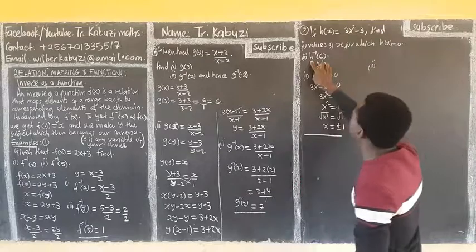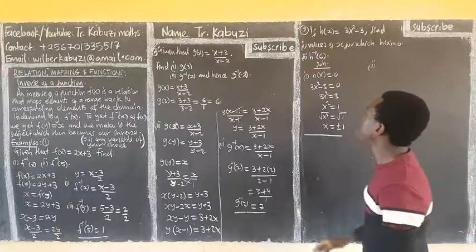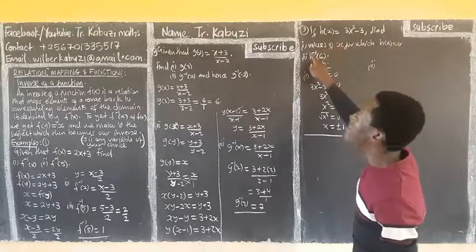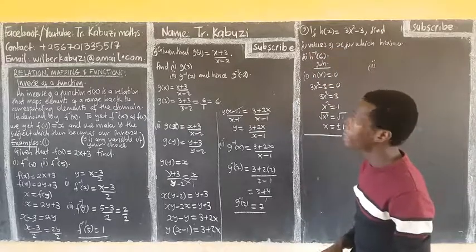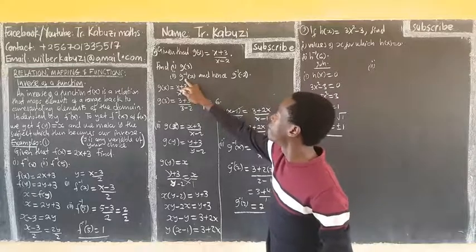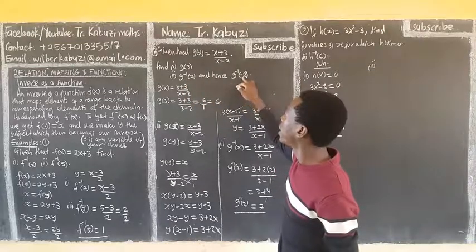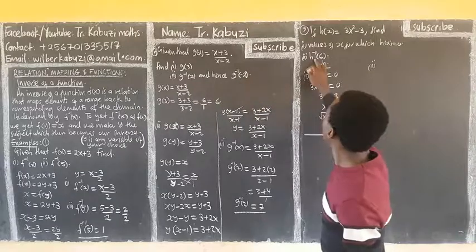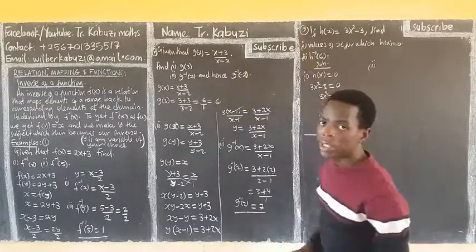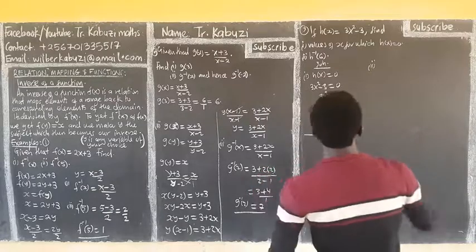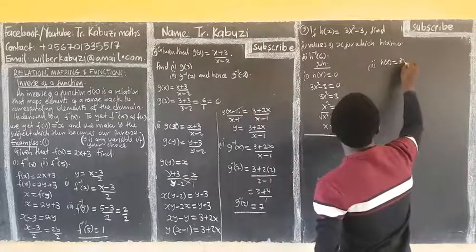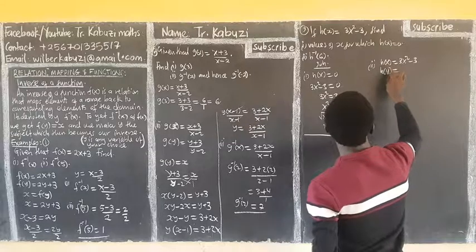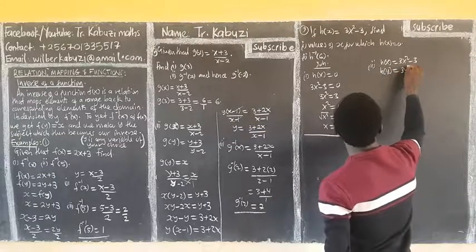They asked me to get h inverse of 6. Before I get this, some questions are like this — they will give you h inverse of 6. It means to get this, you first get the inverse, then in that inverse you substitute the value of 6. So here, already we need to first get h inverse of x, then substitute 6. So h of x is equal to 3x squared minus 3. Now we get h of y: where there is x we put y, so h of y is 3y squared minus 3.